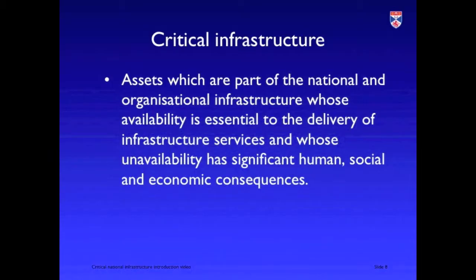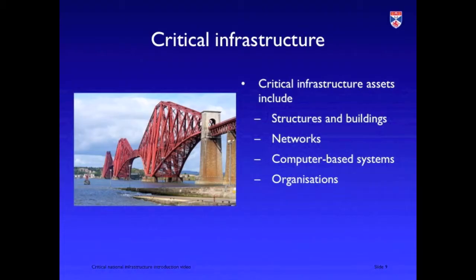Now that's infrastructure in general. What we're interested in here is critical infrastructure — those aspects of the infrastructure which are essential to maintain a functioning modern society. When we talk about critical infrastructure, we usually talk about those assets which are essential to the delivery of the services. These assets are tangible things: structures and buildings such as data centres or bridges, networks covering everything to do with rail, road, aviation and so on, the organisations that maintain and run these networks, and the computer-based systems that are essential for their control.